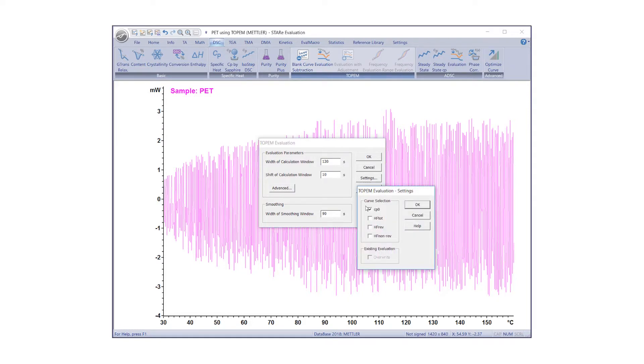In this example, we are displaying the quasi-static-specific heat capacity curve, the total heat flow curve, and the reversing and non-reversing heat flow curves. Click OK to start the Topham evaluation shown on the screen.